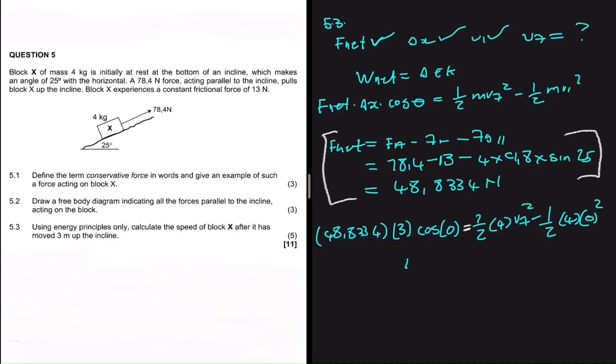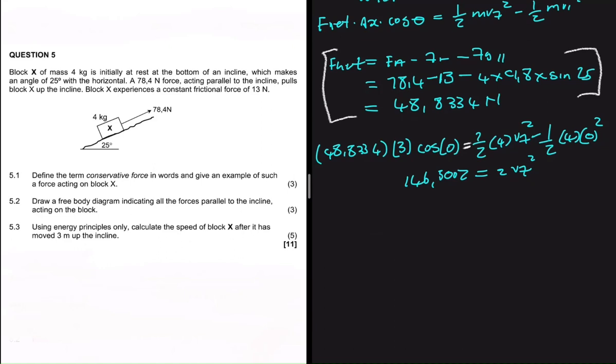We're gonna have 146.5002 being equals to - I have multiplied by four it will be two - two vf squared. So now it's easy to see that vf will be equals to 146.5002 divided by two to the power half. We're dividing both sides by two and taking a square root on both sides. You know it's the same as just taking something to the power half, and if we do that we're getting a vf of 8.56 meters per second.